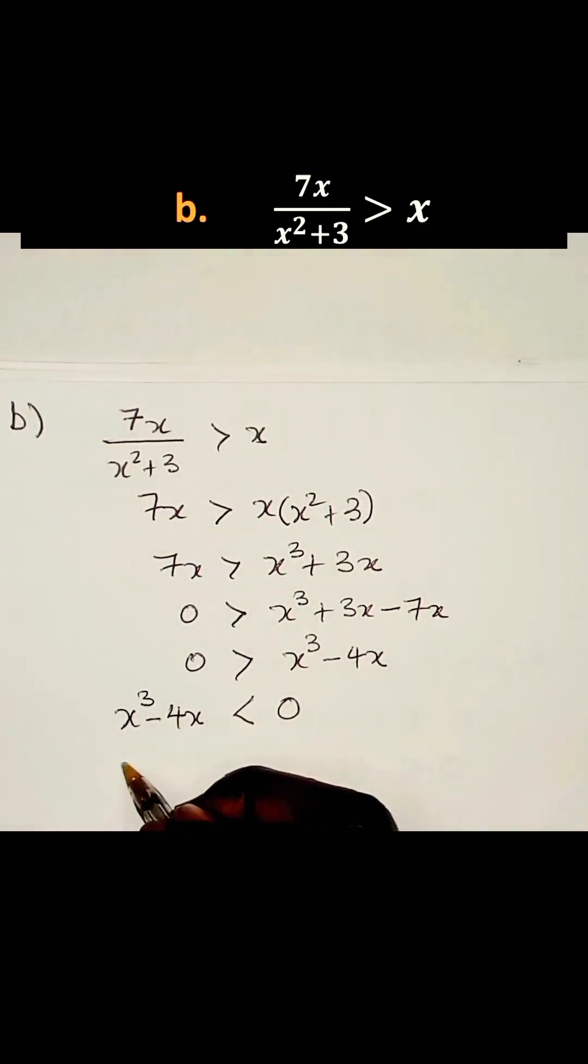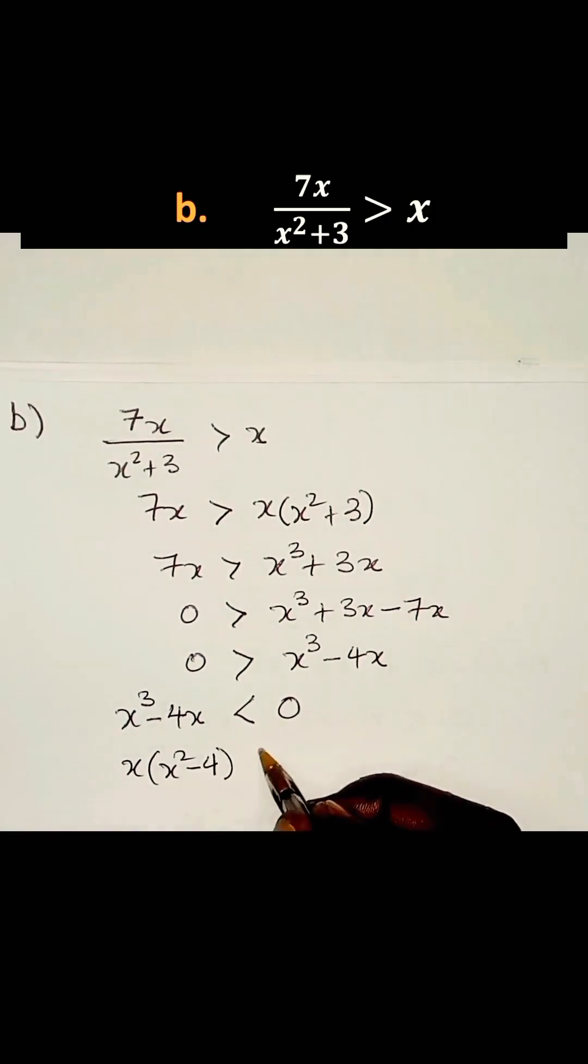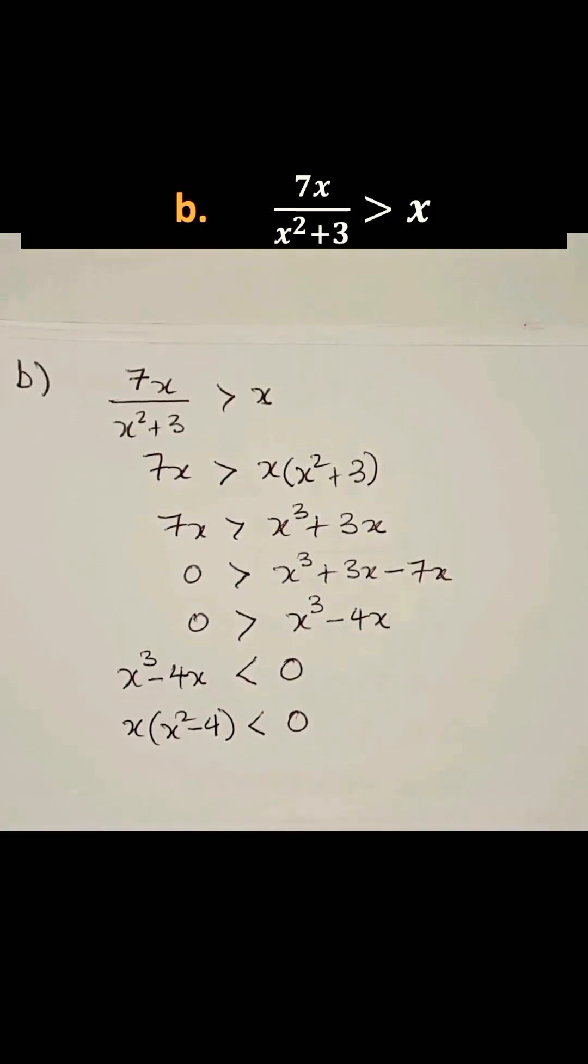Now let's factorize the left hand side. We have x times (x² - 4), which is less than 0. Now we have a difference of two squares. Then we have x(x - 2)(x + 2) < 0.